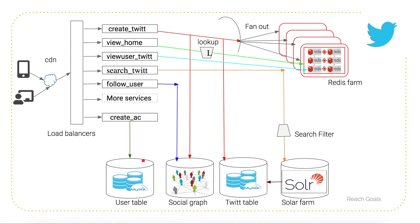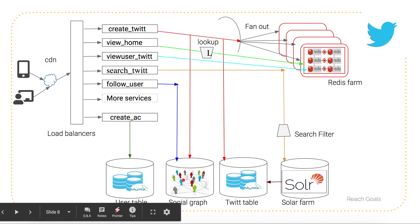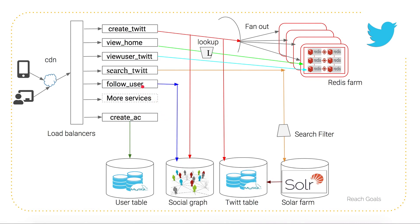Regarding the data layer, the primary database is the user table, which stores user information, details, and account data — used when a user creates an account. The second service is follow users: all follow information is stored in the social graph. As discussed, the social graph creates a relation between you and your entities — for example, tracking who you follow or what articles you follow.